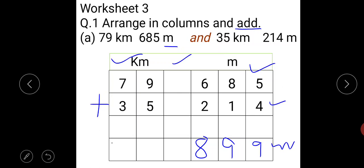Now 4 kilometre, 9 and 5 is equals to 14. So write 4 and carry 1 over 100. 7 and 3, 10, 10 and 1, 11. So your answer is 114 kilometre, 899 metre.